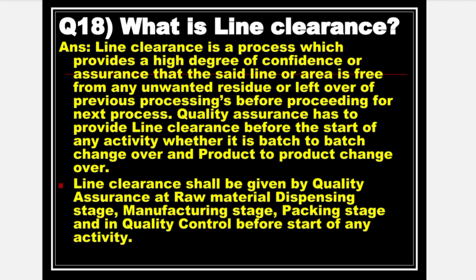Next is: What is Line Clearance? Answer: Line Clearance is a process which provides a high degree of confidence or assurance that the said line or area is free from any unwanted residue or leftover of previous processing before proceeding for the next process. Quality Assurance has to provide Line Clearance before the start of any activity — whether batch to batch changeover or product to product changeover. Line Clearance shall be given at raw material dispensing stage, manufacturing stage, packaging stage, and in quality control before the start of any activity.